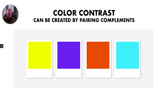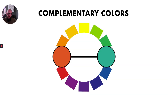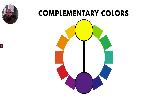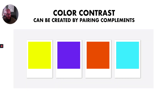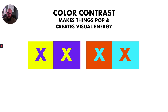One key thing to understand about color is color contrast. One of the easiest ways to create color contrast is by pairing complementary colors together. Complementary colors are located opposite each other on the color wheel — orange and blue, yellow and violet, green and red are key examples. If you're ever wondering what color complements another, it's the color directly across from it on the wheel. When complementary colors are paired together, they make things feel like they're popping, creating a visual energy or vibration.